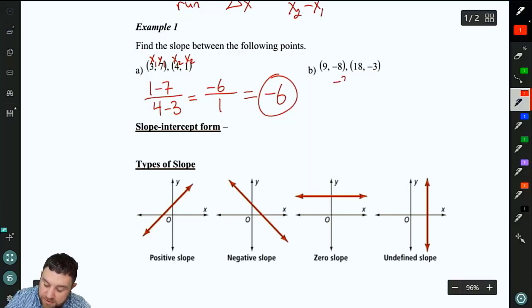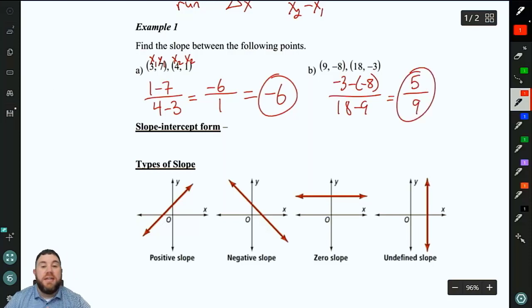For b, we've got negative 3 minus negative 8 on the top. And then we've got 18 minus 9 on the bottom. It's going to give us 5 over 9. That can't be reduced or simplified in any way, so we are done.